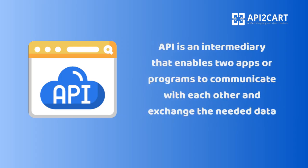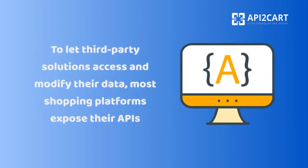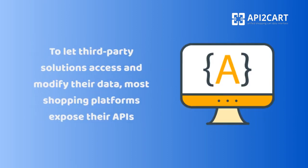An API is an intermediary that enables two apps or programs to communicate with each other and exchange the needed data. To let third-party solutions access and modify their data, most shopping platforms expose their APIs.